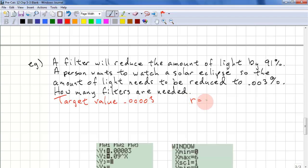Our rate is 1 minus 0.91. This is a change. Reducing is a change. It's not an actual ratio. So, our ratio is 0.09.